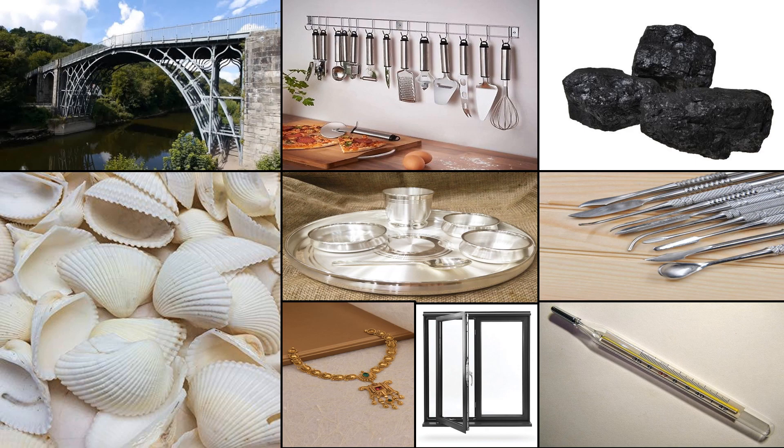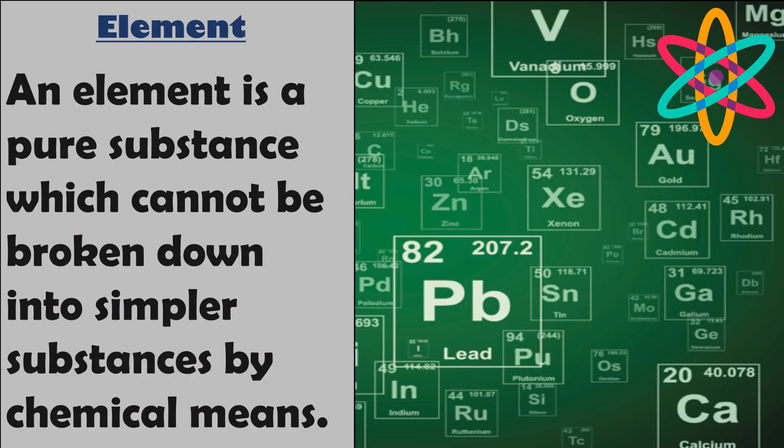We see different objects around us every time. All these objects are made up of different materials or substances. All these objects comprise one or more pure substances called elements. An element is a pure substance which cannot be broken down into simpler substances by chemical means.